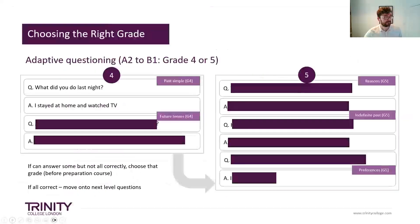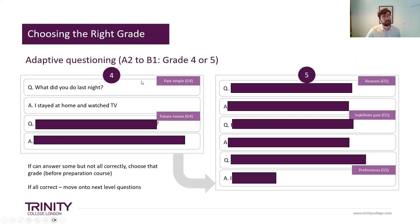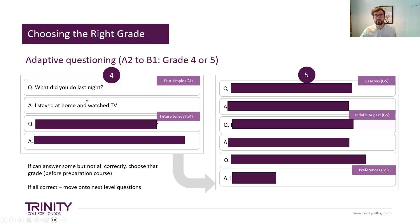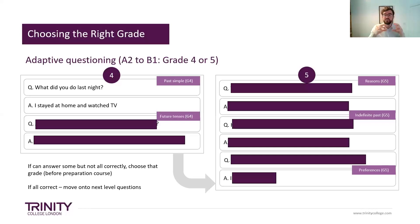Now let's look at adaptive questioning. You can type your ideas in the chat for what the next question might be. Let's say we look at grade four. One of the requirements is talking about the past — past simple. Another requirement is future tenses — 'be going to' is grade four, while 'will' comes in at grade five. You ask questions with your students until they reach a point where they're finding it a little bit difficult. When you get to that level, you might think: okay, I can enter the student at this level.